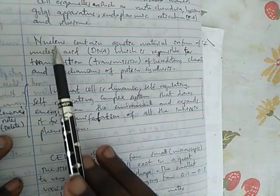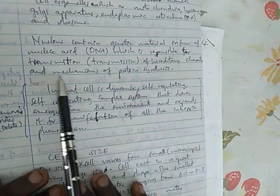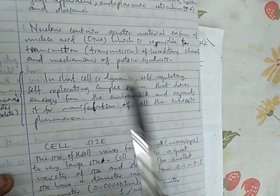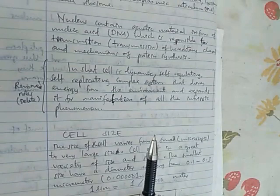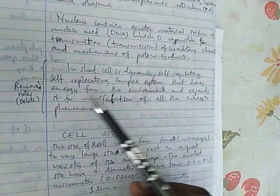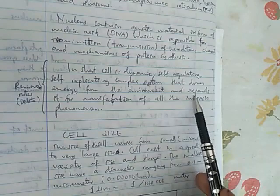Now, nucleus contains genetic material in the form of nucleic acid, that is DNA, which is responsible for transmission of hereditary characteristics and mechanism of protein synthesis. So nucleus is responsible for transmission of hereditary characteristics. But how are hereditary characteristics transmitted? There are many things, here there are things of nuclear division, formation of gametes, protein synthesis, et cetera. In short, a cell is dynamic, self-regulating, self-replicating complex system that derives energy from environment and expands it for manifestation of all the intrinsic phenomena.